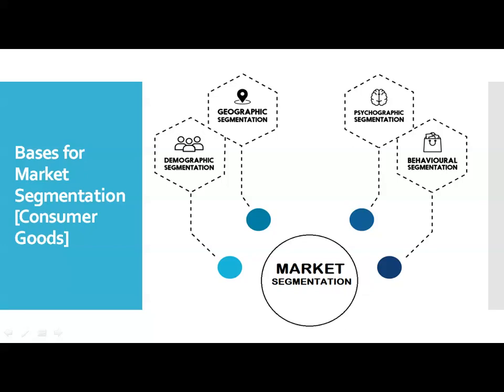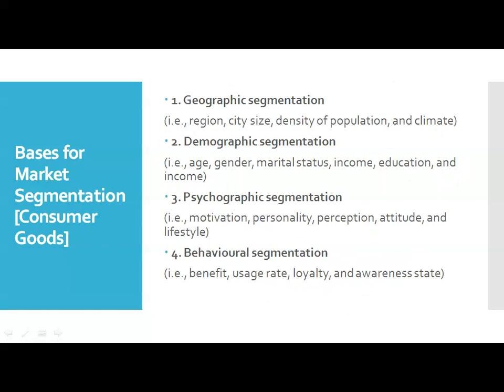A market is a collection of consumers that can be divided into different groups using some criteria, such as age, income, occupation, gender, personalities, usage quantity and lifestyle. In geographic segmentation, the market is divided depending on region, city size, density of population and climate. In demographic segmentation, the market is divided according to age, gender, marital status, income and education.